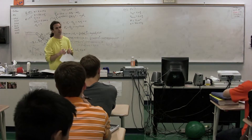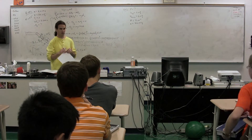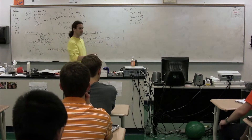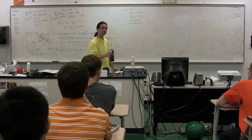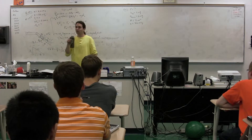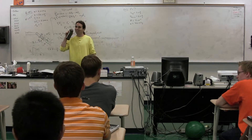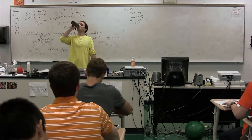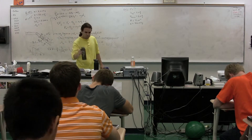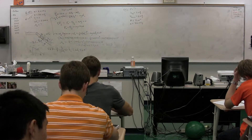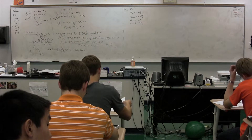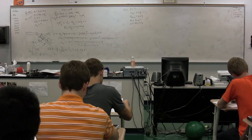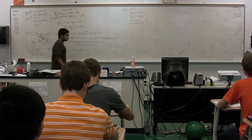A student asks: so he's not accelerating down the hill? The instructor clarifies: he's moving at a constant velocity both up and down the hill — he coasts down at constant velocity. The instructor then asks the class to begin working, and expects to see free body diagrams on everyone's paper.